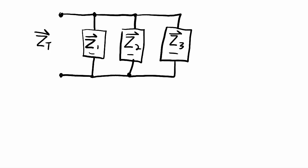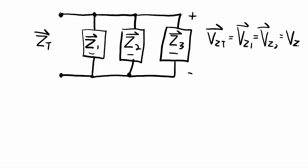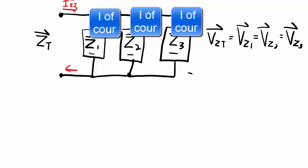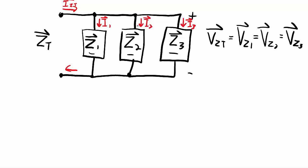I can use those laws to help me determine a general equation for the total impedance of this parallel impedance circuit. Since these components are all in parallel with each other, the voltage across them will all be the same. So the total voltage equals the voltage across component one, equals the voltage across component two, equals the voltage across component three. The currents are not necessarily the same though. The total current will be the current going into the circuit, and some of it goes through Z1, some through Z2, and some through Z3.